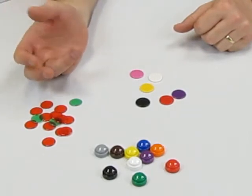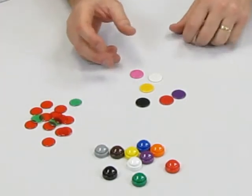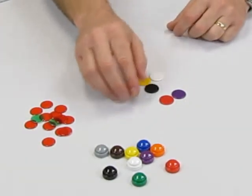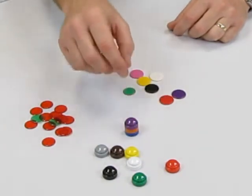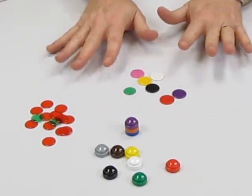So counters might come in 18 millimetres, 22 millimetres, 36 millimetres. They might come in opaque or transparent. They might come in this form which are stackable counters, so they literally stack on top of one another. They might come with little serrated edges. There's such a variety of counters.